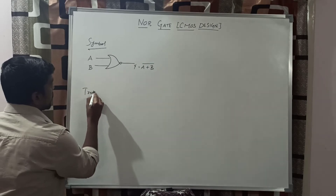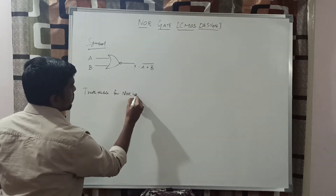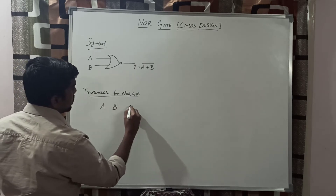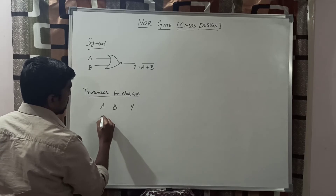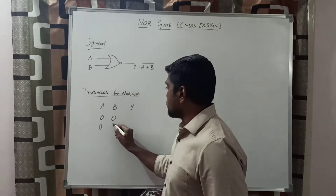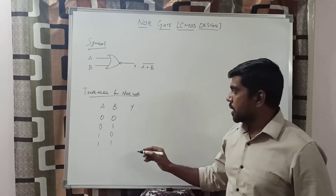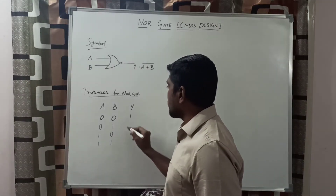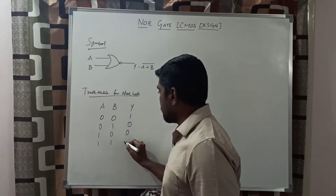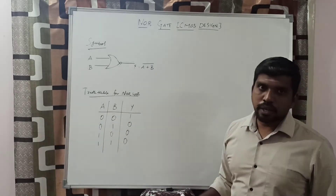Now you write the truth table for the NOR gate. We can make the table with the input and output. We can apply the four combinations of input: 00, 01, 10, 11. You know the property of NOR gate — when both values are at low level, the corresponding output is 1. For the remaining three cases, the result is 0.